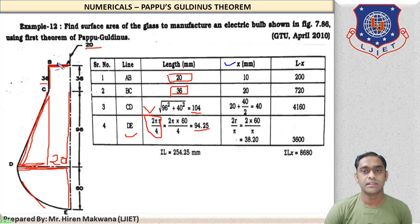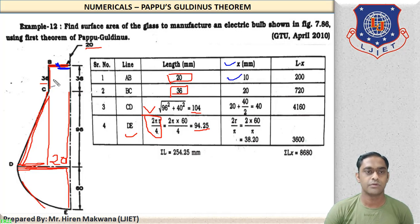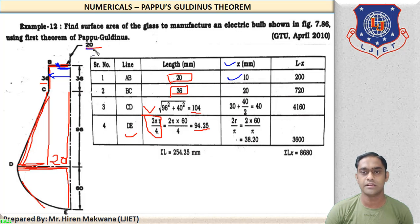Now let us calculate the X-coordinate centroid for all four parts. Remember all elements are lines, not areas, because we have to find surface area. The CG of horizontal line AB is at its midpoint, so measuring from the Y-axis, X₁ = 10 mm. For vertical line BC, the CG is at its midpoint, so X₂ = 20 mm.